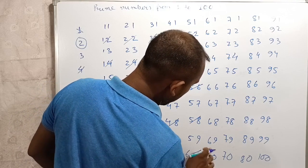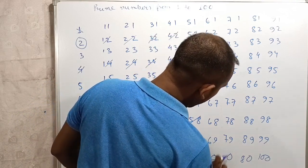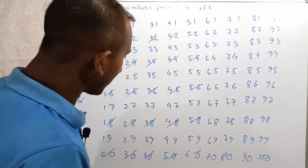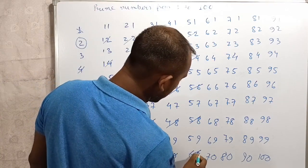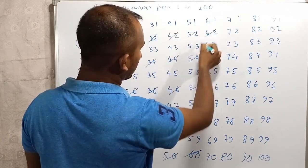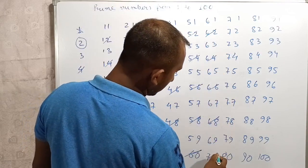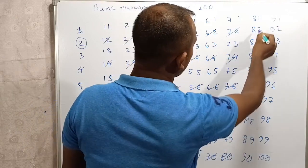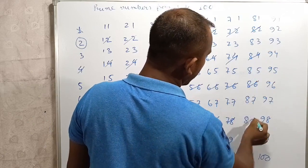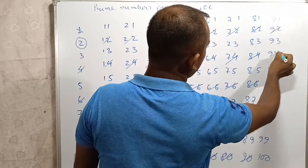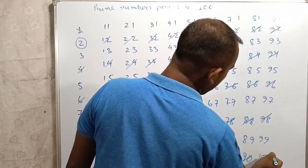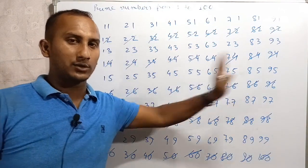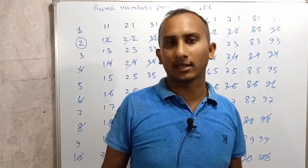So, 60, 70, 80, 90. Then 61, 62, 63, 64, 66, 68, 70, 72, 74, 76, 78, 80, 82, 84, 86, 88, 92, 94, 96, 98, 90, 100. So this is the multiples of 2. We can cancel the multiples of 2.